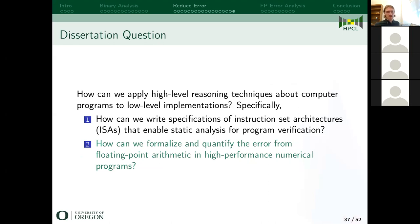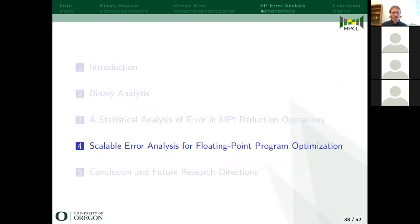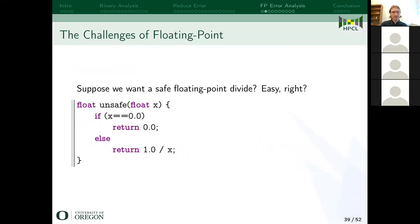That started to answer the second part of my dissertation question — how can we formalize and quantify the error from floating point arithmetic in high-performance numerical programs — but it's not quite done yet. I looked at summation, and summation does not a numerical algorithm make. So we'd like to look at something more sophisticated. This brings me to the next chapter: scalable error analysis for floating point program optimization.